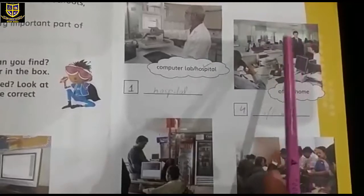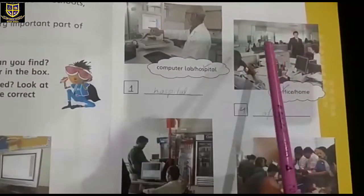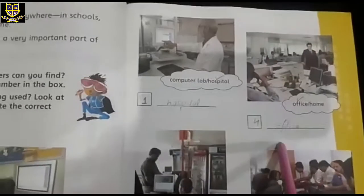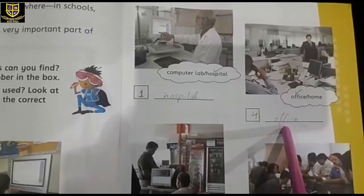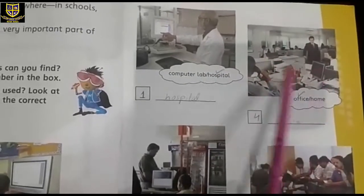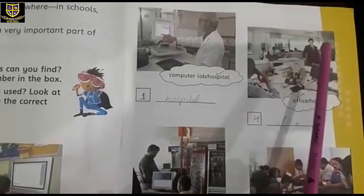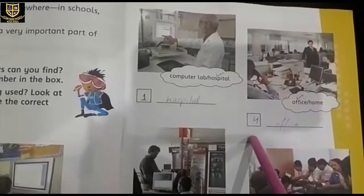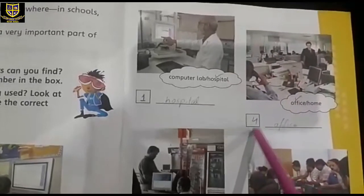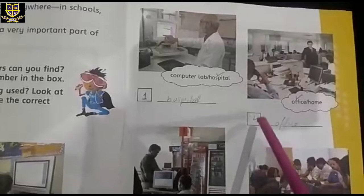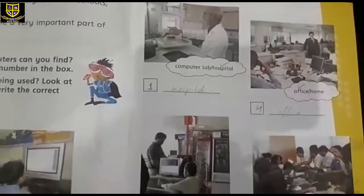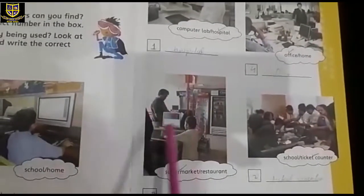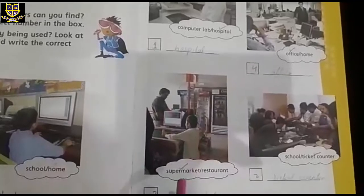You can see many people over here — they are sitting and they are using the computer, so it is an office. In the blank you are going to write 'office'. Now write the number of computers — just count them, they are four in number. In this box you are going to write four. The number of computers is four.